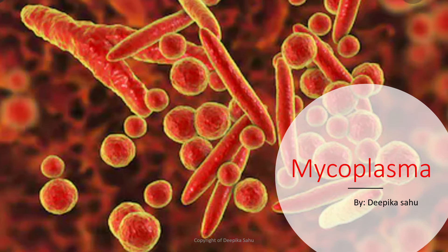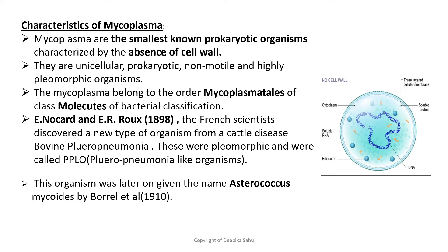First, we will look at the characteristics of mycoplasma. Mycoplasma are the smallest known prokaryotic organisms, characterized by the absence of a cell wall. As we can see in this picture, they have a trilamellar cellular membrane — a three-layered cellular membrane — but they have no cell wall, and there is no peptidoglycan.